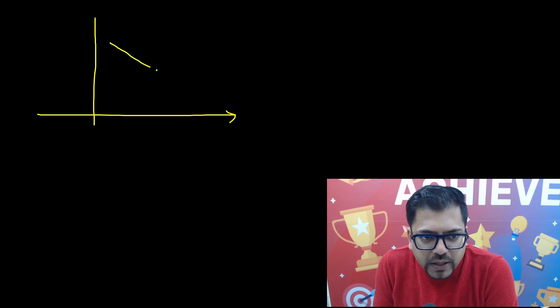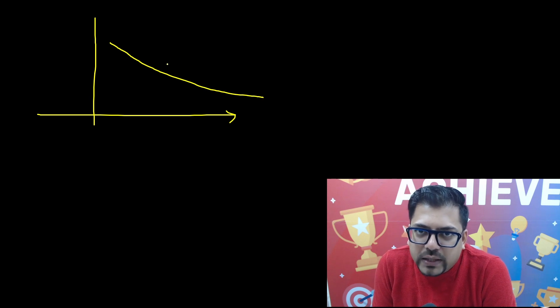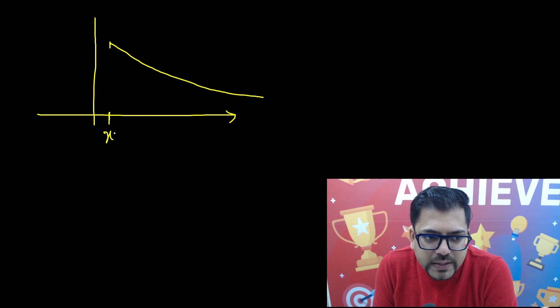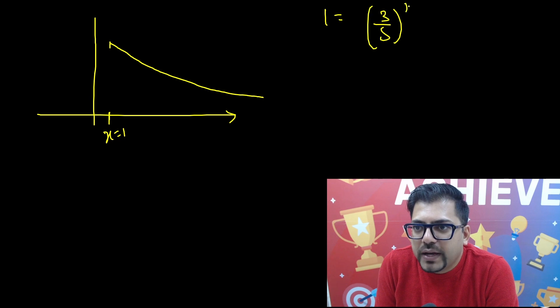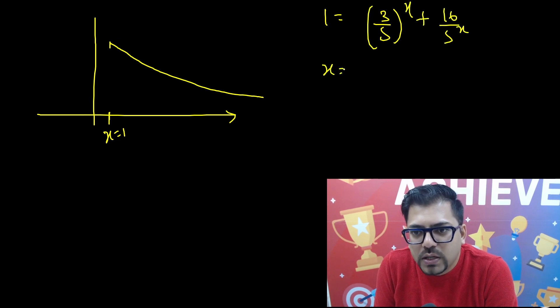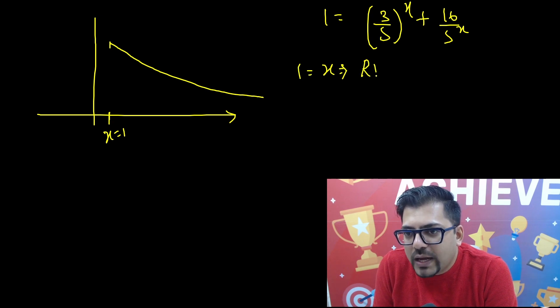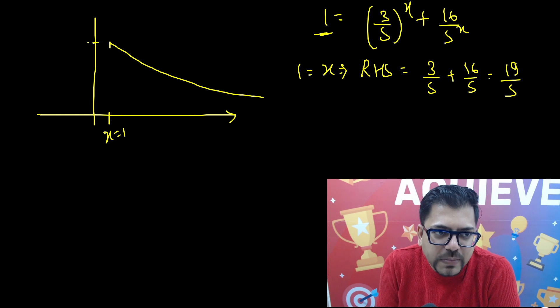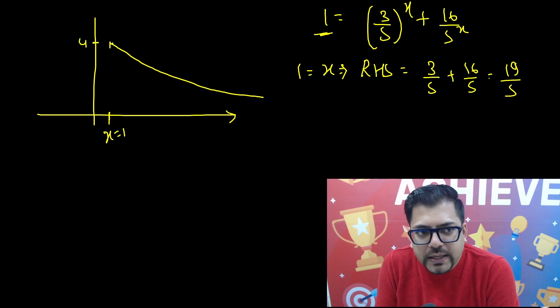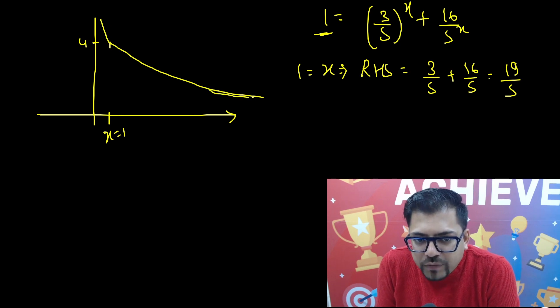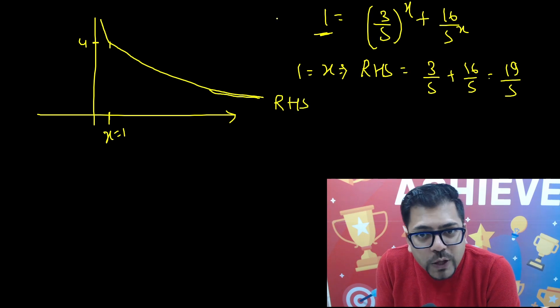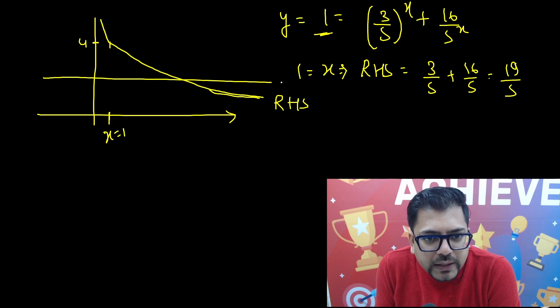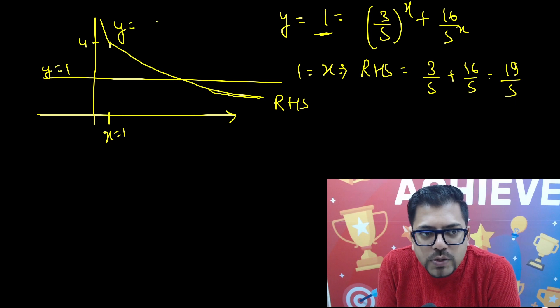Now just make a graph like this. You know that this is going to be a decreasing graph. I have taken the benchmark x equals 1. If you put x equals 1, what will be your RHS? I am only talking about RHS. This will be 3/5 plus 16/5, and that is nothing but 19/5. 19/5 is something close to 4. So it's around 4. If you make it smaller, it will go higher and higher. Now we have got this graph and this is the graph of RHS. LHS has y equals 1. So now if you make a line like this, y equals 1. This is your y equals 1, and this is your RHS graph.